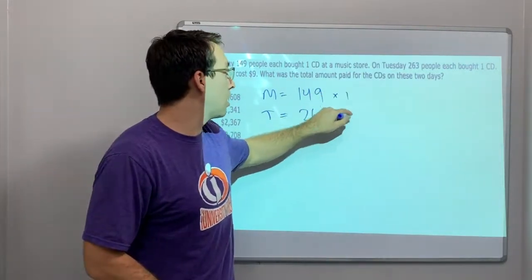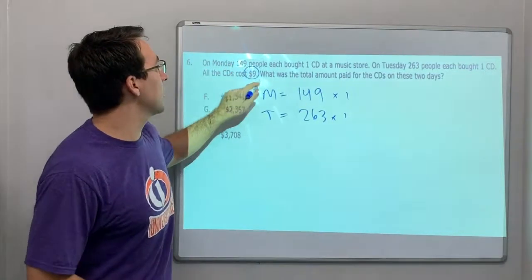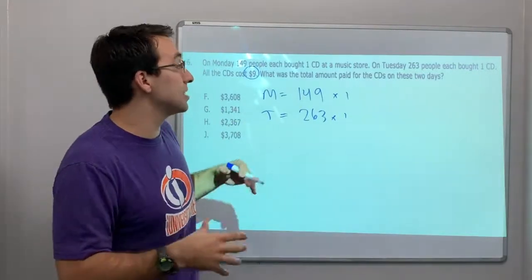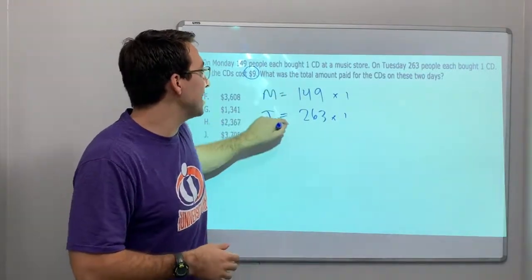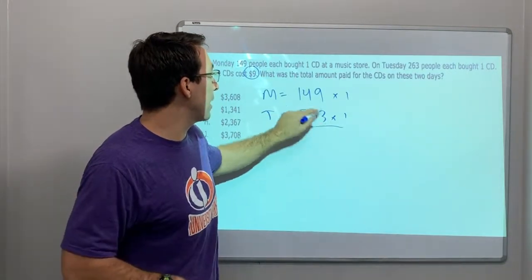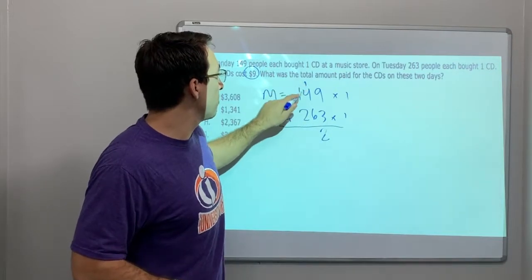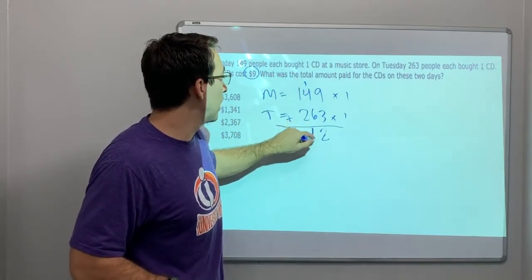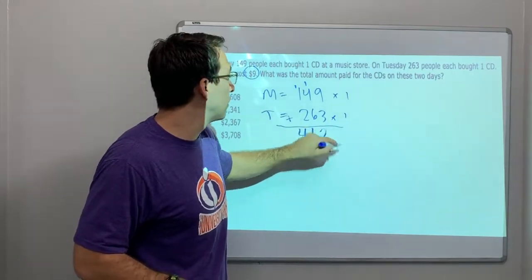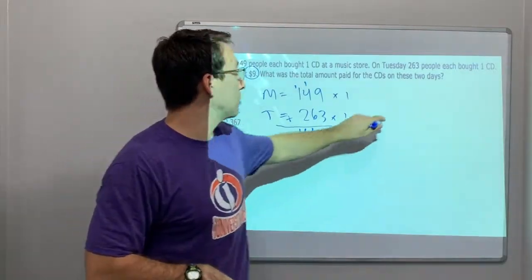All the CDs cost nine dollars. What is the total amount paid for the CDs on both days? Let's add how many CDs were purchased total: 149 plus 263. 9 plus 3 is 12; 1 plus 4 plus 6 is 11; 1 plus 1 plus 2 is 4. So 412 total CDs. Each CD was nine dollars.